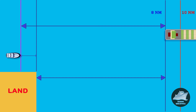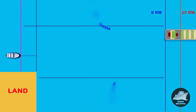When measured from land, the vessel has only moved 8 nautical miles, so the speed over ground will be 8 knots. Because of the 2-knot ahead current, the boat will move 2 nautical miles away from the ship. The distance covered by the ship with respect to the floating boat will be 10 nautical miles, so the speed through water will be 10 knots.